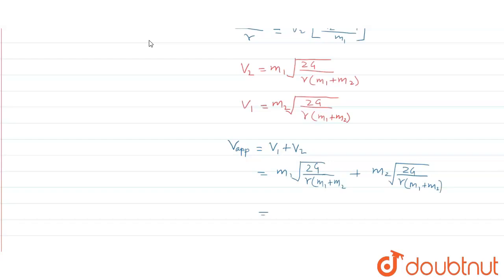This will be m1 plus m2 into under root 2G upon r times m1 plus m2. So finally, this will come out to be: